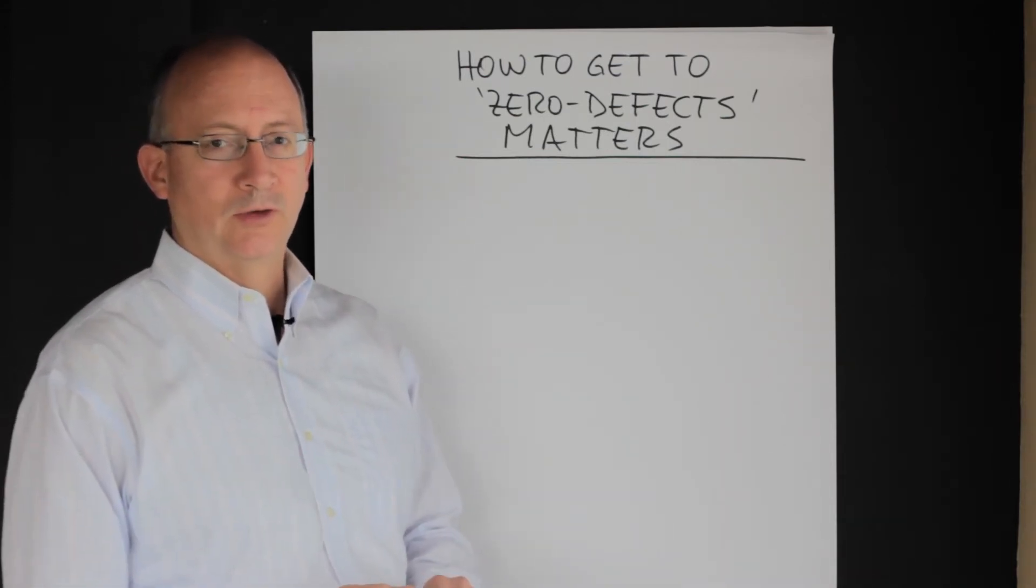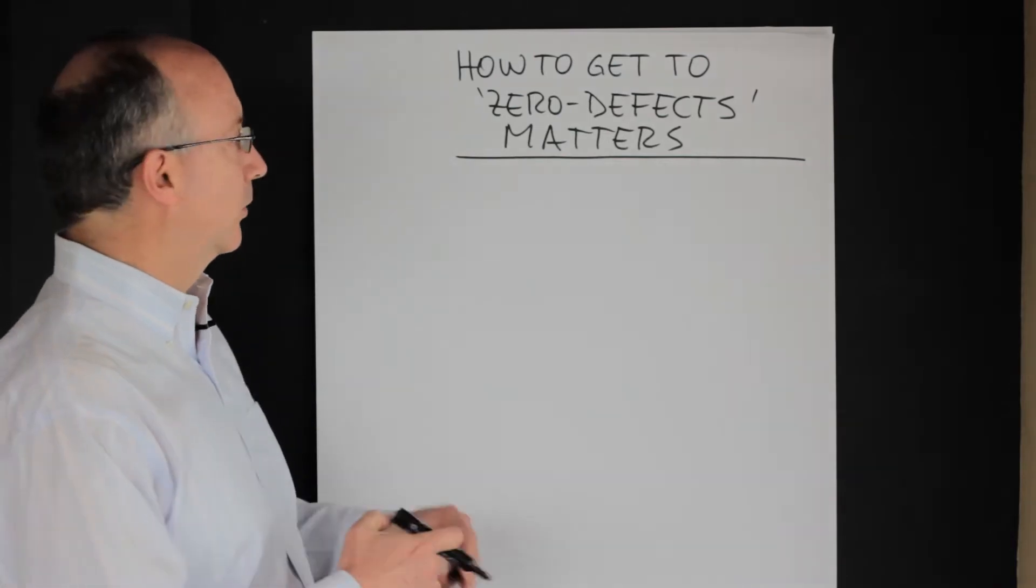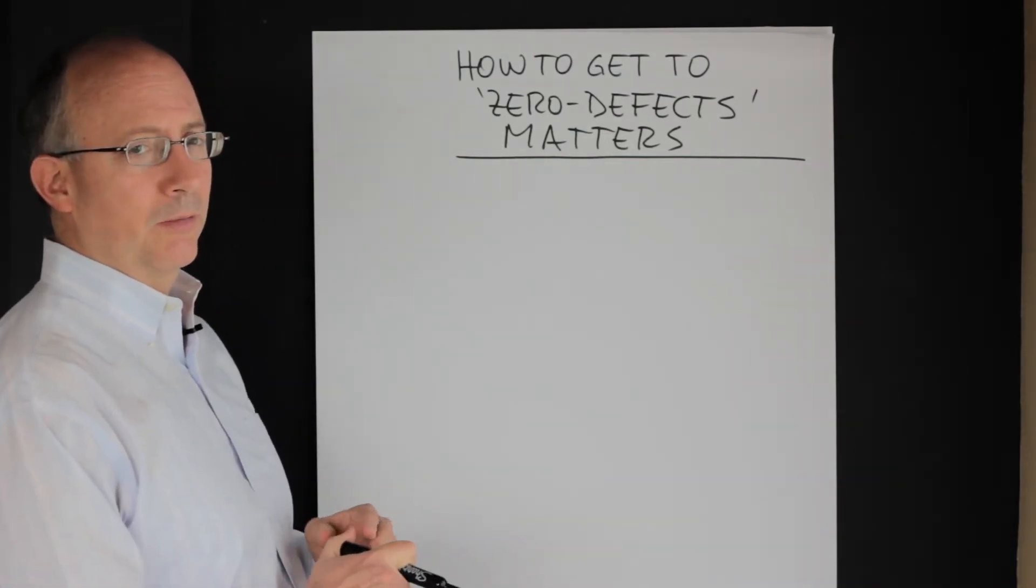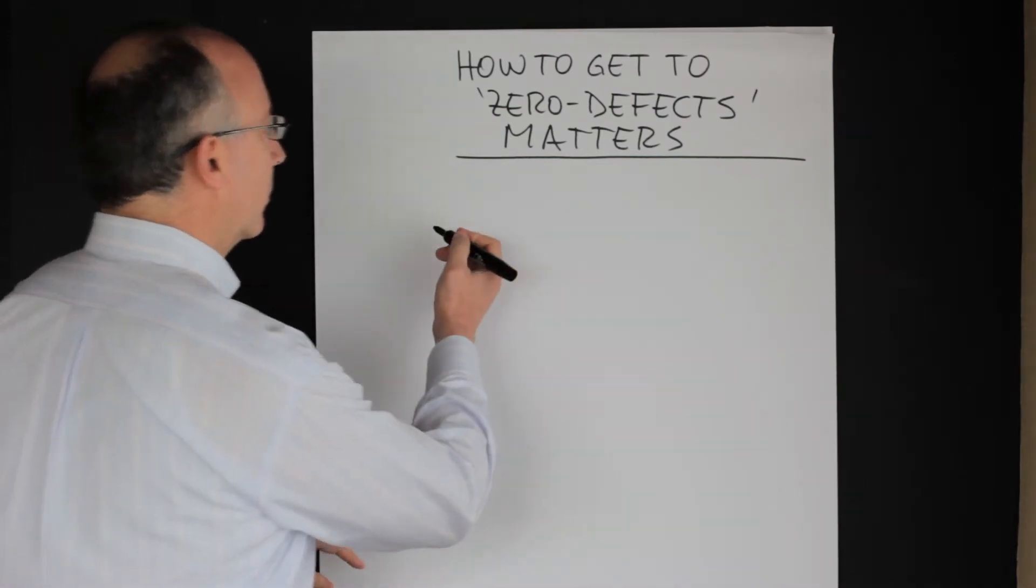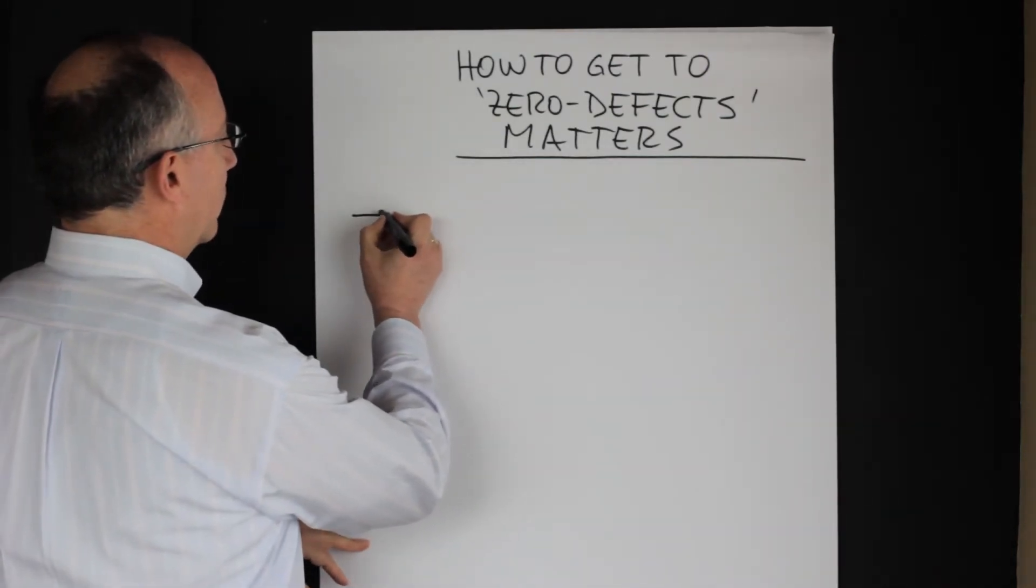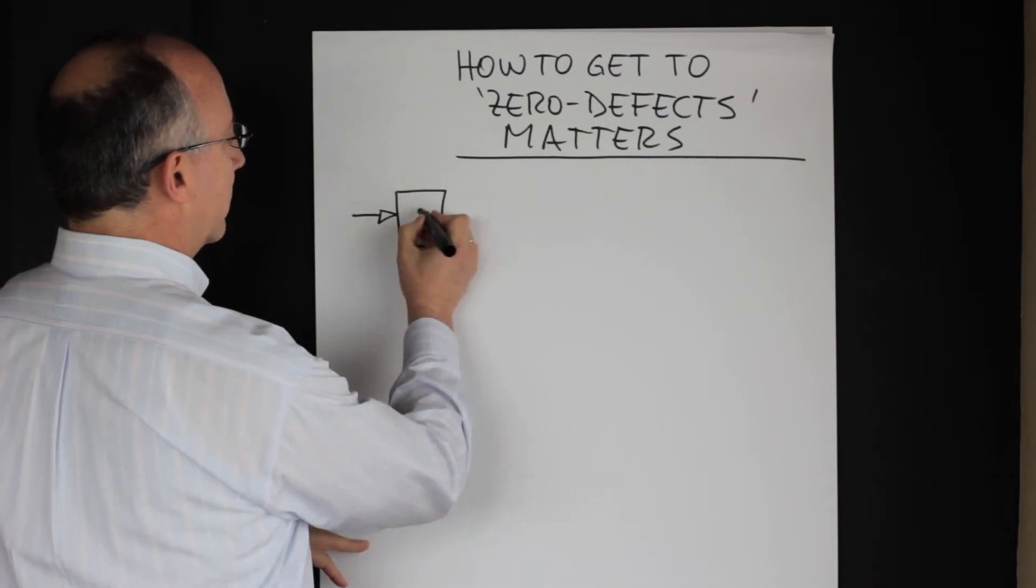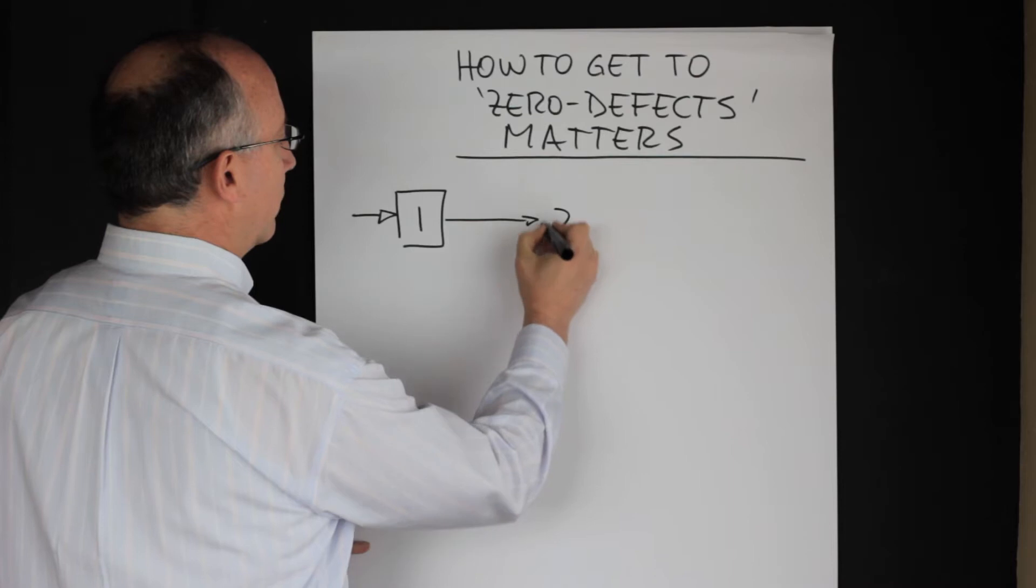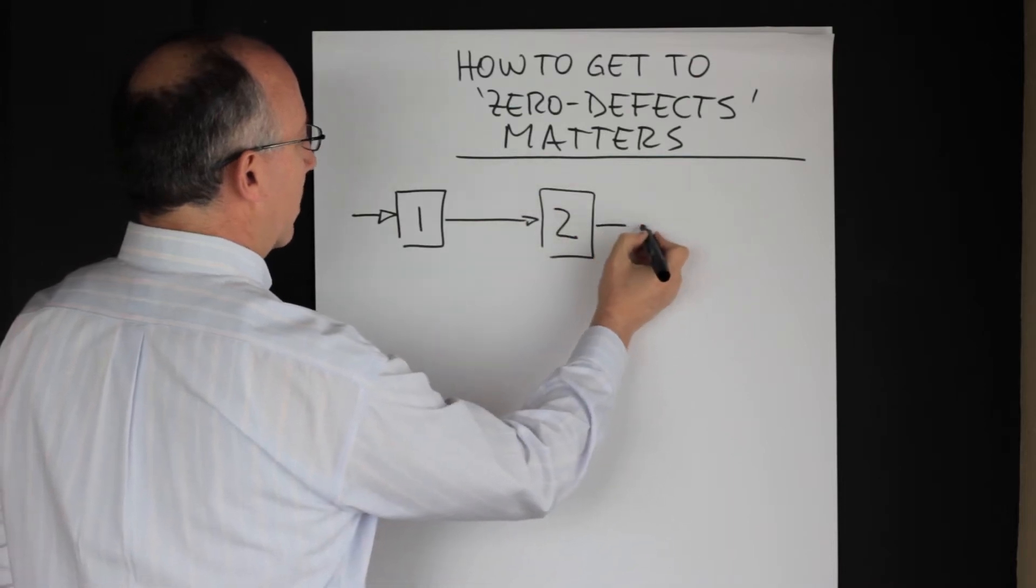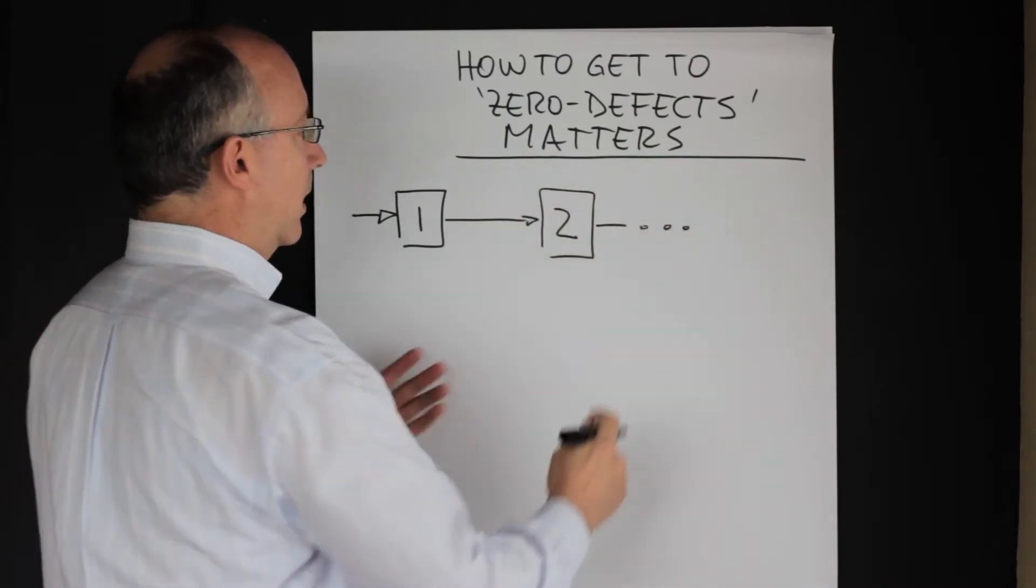Let's explore the first way to reaching zero defects. I'm going to draw here a process map, a very simple description of a process map with a number of steps going from left to right. So we could think about one process made by step one and then step two and then on and on, a number of steps.